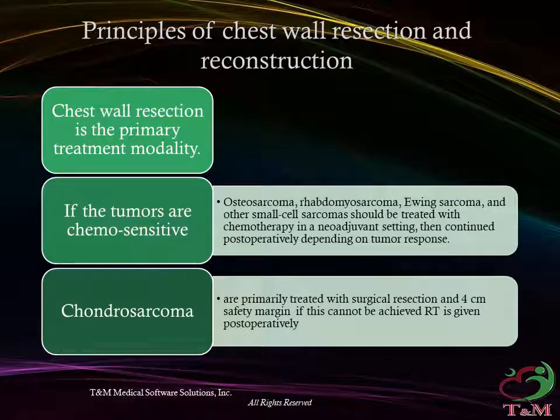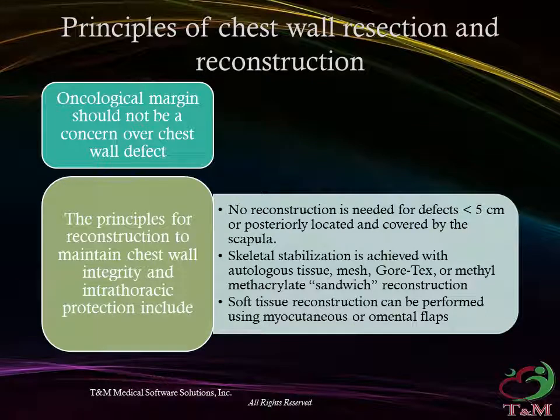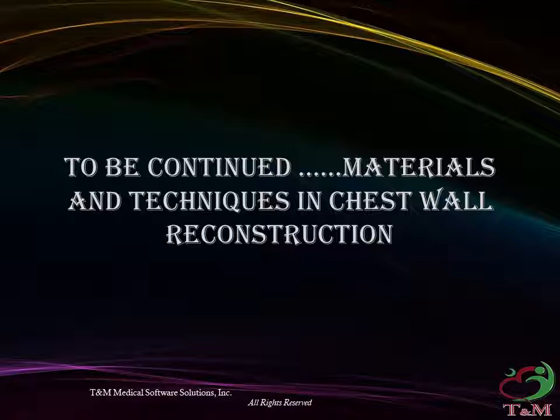Chondrosarcomas are primarily treated with surgical resection with a 4 cm safety margin; if this cannot be achieved, radiotherapy is given postoperatively. Principles of chest wall resection and reconstruction: oncological margin should not be compromised over chest wall defects. Reconstruction is not needed if the defect is less than 5 cm or posteriorly located and covered by the scapula. Skeletal stabilization is achieved with autologous tissue, mesh, Gore-Tex, or methyl methacrylate sandwich reconstruction. Soft tissue reconstruction can be performed using myocutaneous or omental flaps.